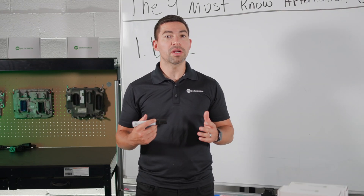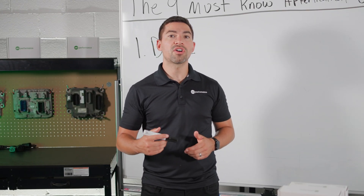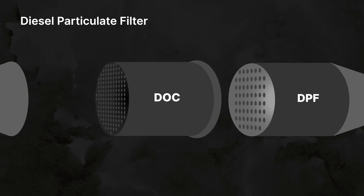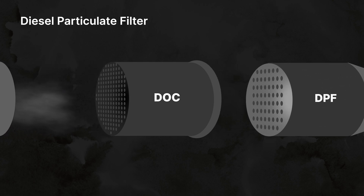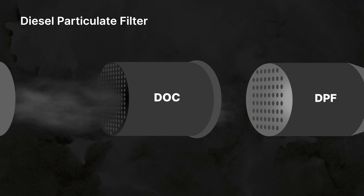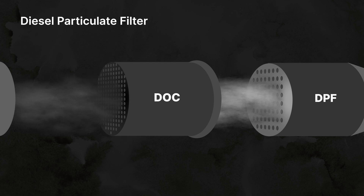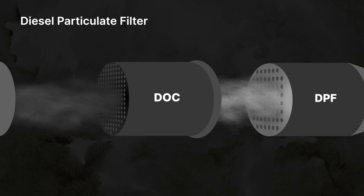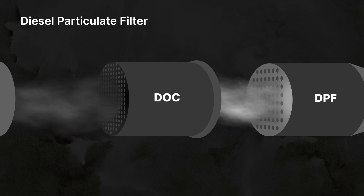The second after-treatment component is called the DPF, located right after the DOC filter. This captures the soot coming from the engine exhaust, significantly reducing particulate matter emissions. It is located downstream of the DOC and traps the particulate matter until it's burned off during regeneration, which is managed by the ECM.